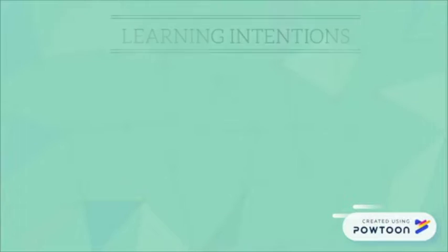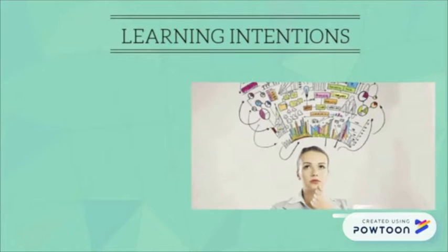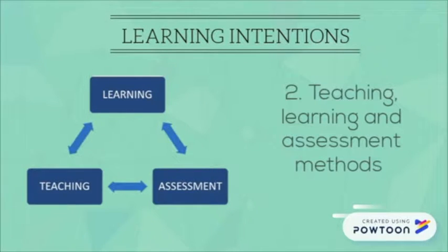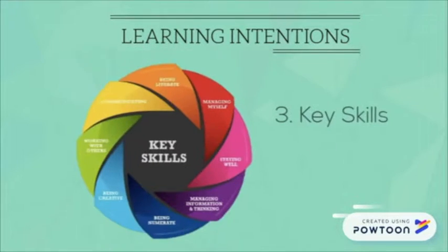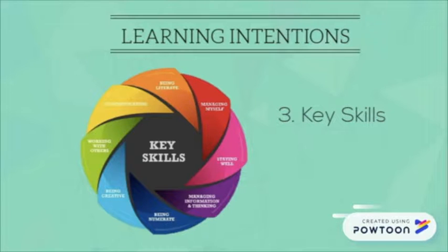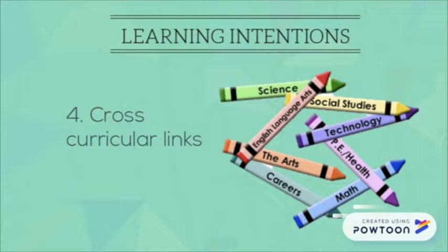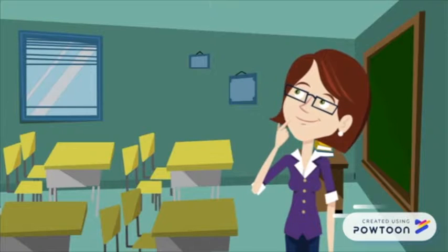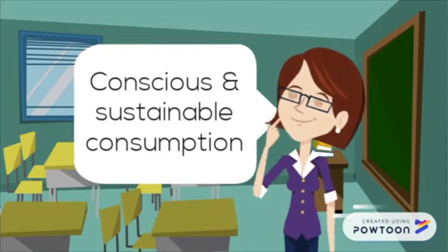In this presentation, our learning intentions will cover: our understanding and the rationale as to why the topic of Conscious and Sustainable Consumption was chosen and its significance for Junior Cycle students' learning across the curriculum; a range of active and creative teaching, learning and assessment methods and resources; how key skills which underpin the Junior Cycle curriculum are incorporated in the topic; how to forge cross-curricular links and showcase a cross-curricular theme with other subject disciplines; and the potential challenges for post-primary students and teachers when working with the topic of Conscious and Sustainable Consumption.